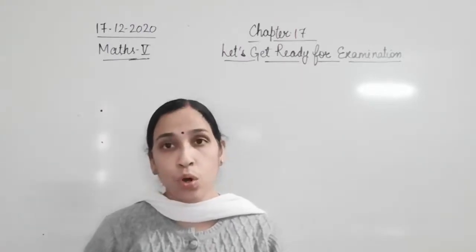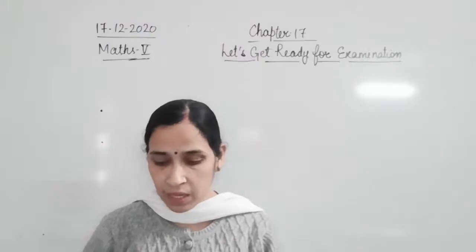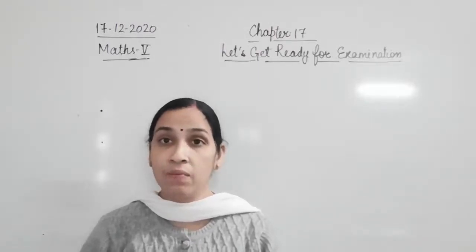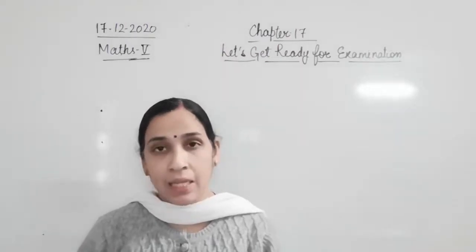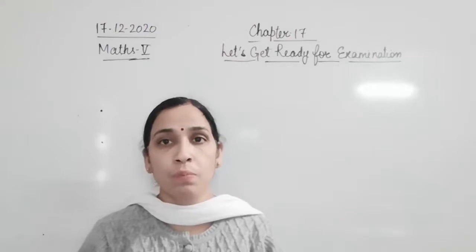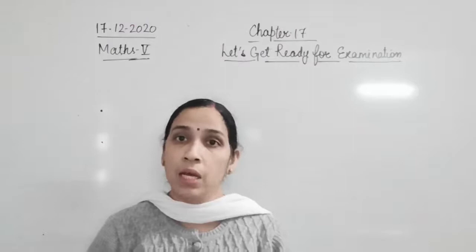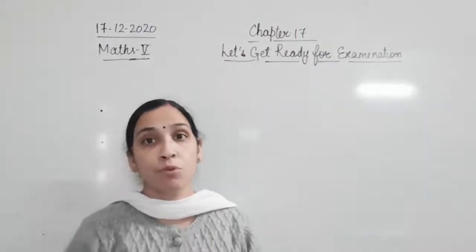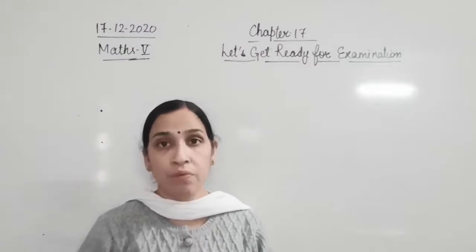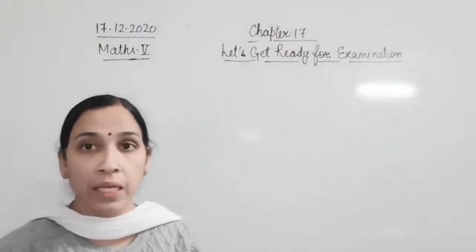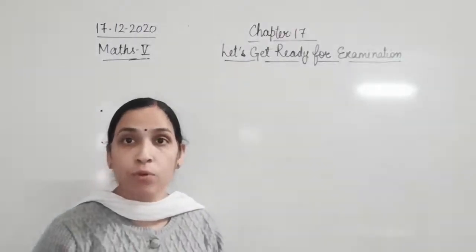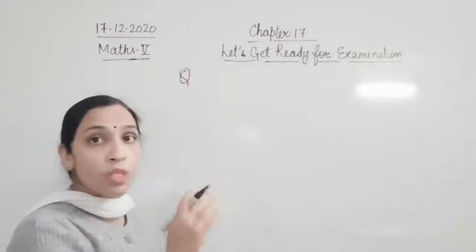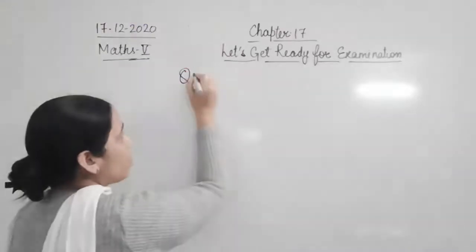Question number 33: Rahul gave 3/4 of his bank balance to his wife. If his bank balance was rupees 28,000, how much did his wife get? The total sum of money is rupees 28,000, and out of 28,000, he gave his wife 3/4 of his bank balance. So the fraction of money Rahul gave to his wife is 3/4 of rupees 28,000.